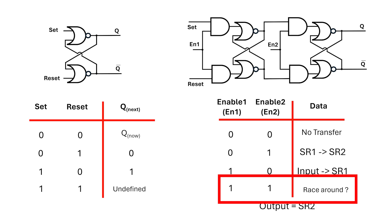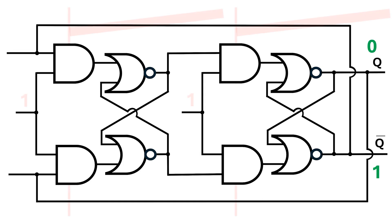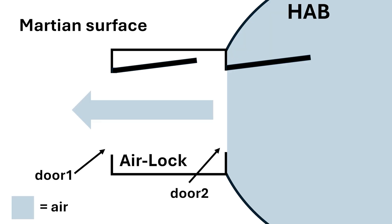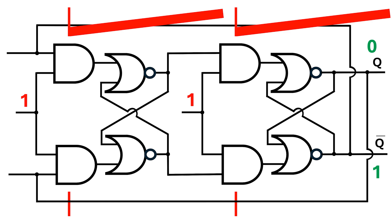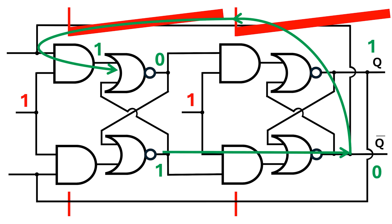Let's see if we can figure out why this race-around condition still occurs. Both enables are set to 1, which is analogous to opening both doors on an airlock. Let's follow the flow of 1s. If Q is 0, then Q-bar will be 1. This 1 feeds back to the top AND gate, and results in the output 0-1 on the intermediate stage. This goes through the right set of AND gates, and the output becomes 1-0.